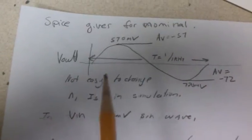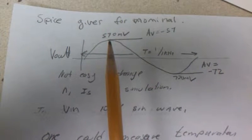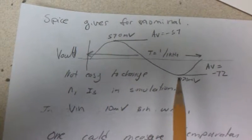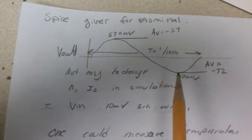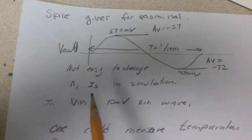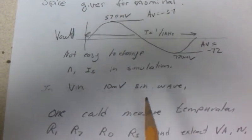I did run it in SPICE just to check. The nominal version, the high side and the low side, shows a gain of minus 57 and on the other side we get a gain of 72. It's not easy to change these in the SPICE simulation, it's beyond the scope of this class so I didn't do it.